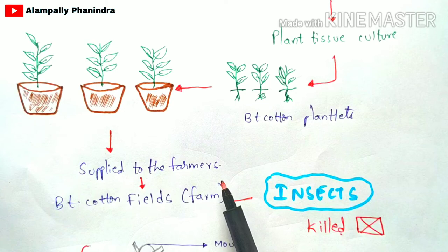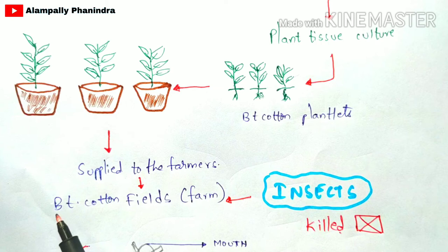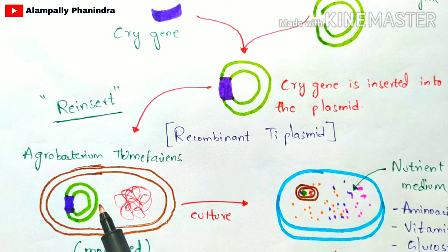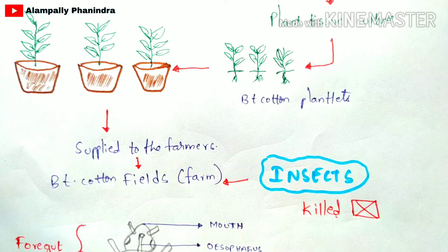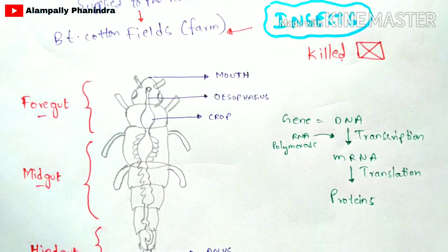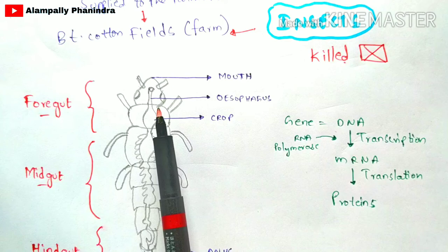Once the insect feeds upon the BT cotton, which contains the cry gene, the insect will get killed. When an insect feeds on the BT cotton leaves, the modified Bacillus thuringiensis enters into the foregut, midgut, or hindgut — the gut region of the insect. From its mouth, it consumes the BT cotton plant, and the modified Bacillus thuringiensis enters into the gut of the insect.